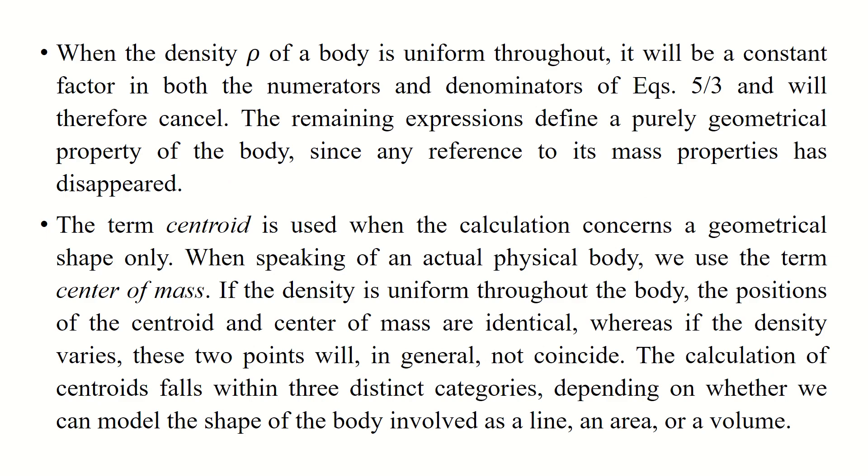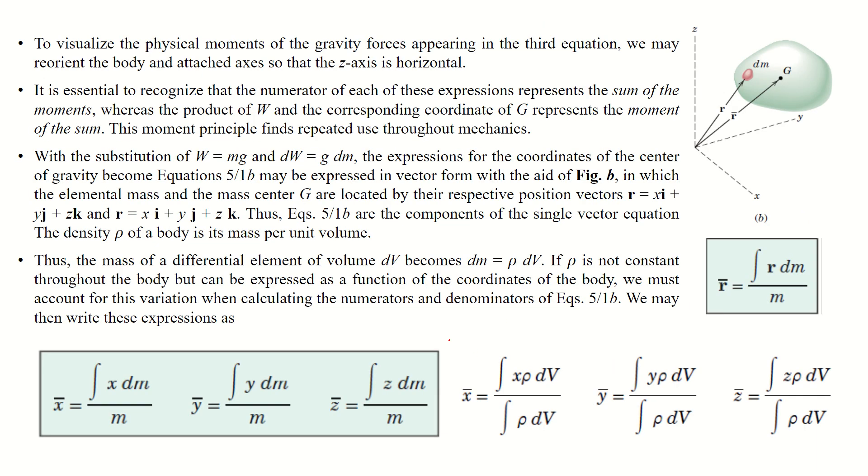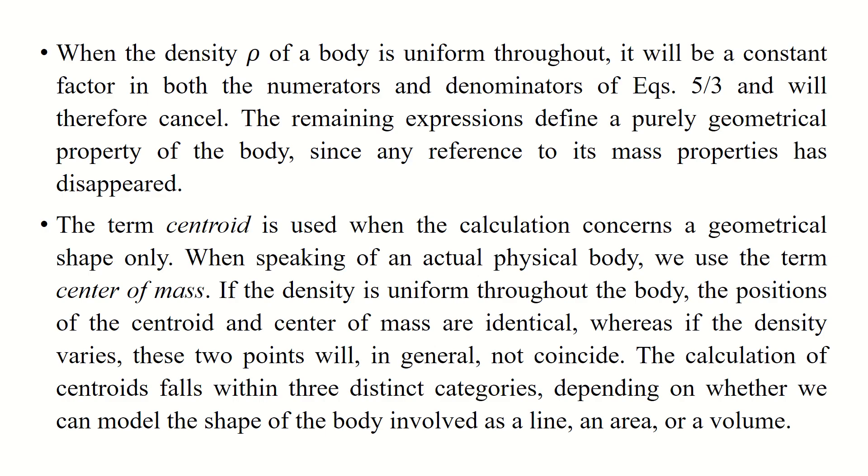When the density ρ of a body is uniform throughout, it will be a constant factor in the numerator and denominator of the equations. As you can see from equation 3 in your book, density appears up and down. If uniform, it will cancel because it is homogeneous. The remaining expression defines a purely geometrical property of the body, since any reference to its mass properties has disappeared.